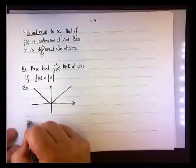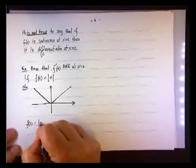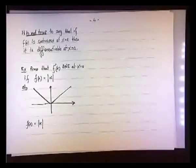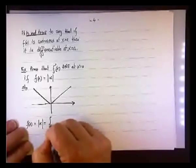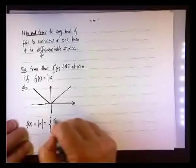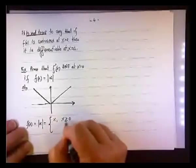By definition, the absolute value function—and you had a homework problem that dealt with another absolute value function, I think at x minus 3 or something like that—it's defined as follows. If x is positive, then f(x) equals x, if x is greater than or equal to 0.